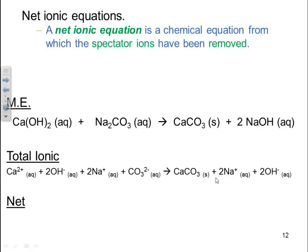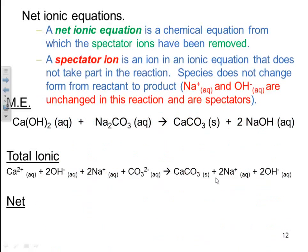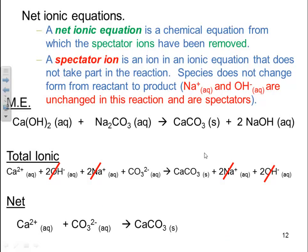Next is your net ionic equation. The net ionic equation is a chemical equation from which the spectator ions have been removed. A spectator ion is an ion in an ionic equation that does not take part in the reaction — the species does not change form from reactants to products. In this problem, sodium⁺ and hydroxide⁻ are both aqueous ions on the reactant side of your total ionic as well as on the product side, so they are spectators. We will eliminate them when we write the net ionic equation, so the hydroxides and sodiums go away.